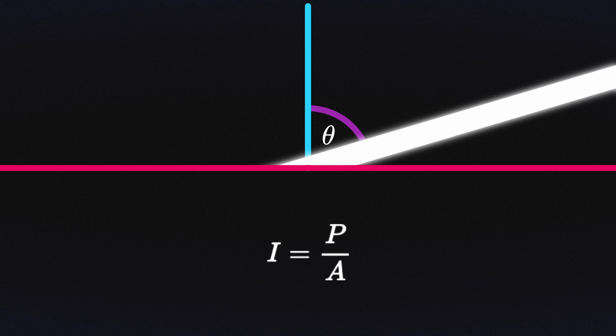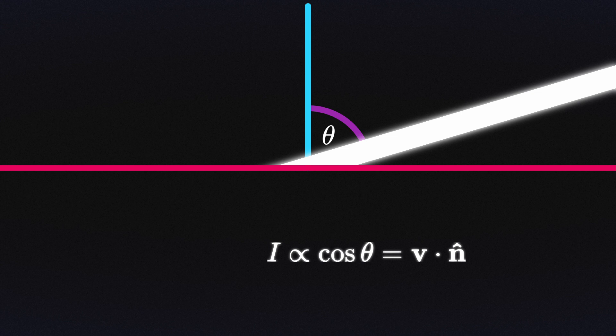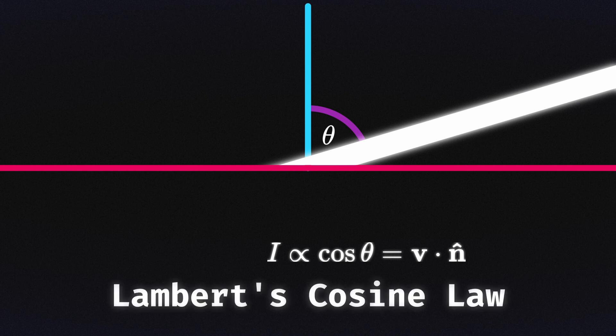The intensity is in fact proportionate to the cosine of that angle. Since both the light direction and the normal are unit vectors, the weighting required is as simple as multiplying by the dot product between them, the cosine of that angle. This is called Lambert's cosine law.